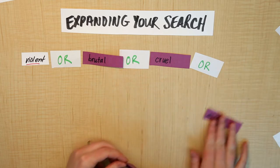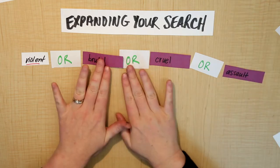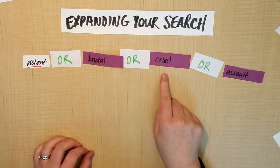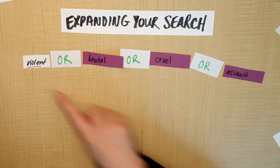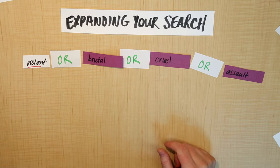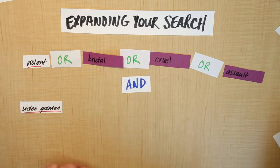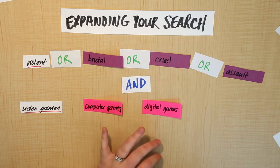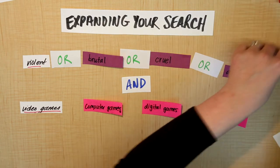I'm just going to keep these ones for now just for the interest of space. Okay, so if we say that we are okay with violent OR brutal OR cruel OR assault, that gives the database more options. So we definitely want at least one of these words, and we want at least one of these words. Video games OR computer games OR digital games OR fighting games—these were some different examples that we came up with.